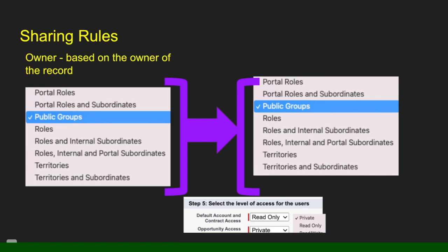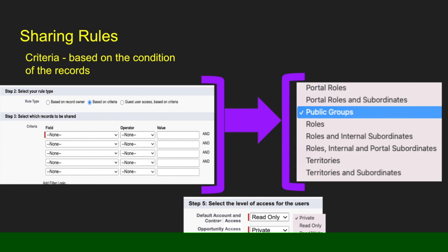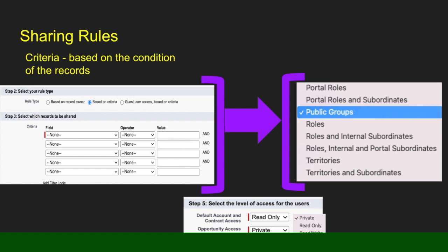With sharing rules, you can create multiple sharing rules. The first one is owner-based, which is based on the owner of the record. If I own a record, I can then grant access to portal users, public groups, roles, territories, and you can specify the access of read-only or read/write. For example, I can grant access to account and contact but leave opportunity and cases as private. The next one is criteria-based sharing rules — this is based on the condition of the record. Some criteria on the record is set in the rule for sharing. You share it with the same types of users and select the same types of access. The difference is your rule selection for how the record gets selected.